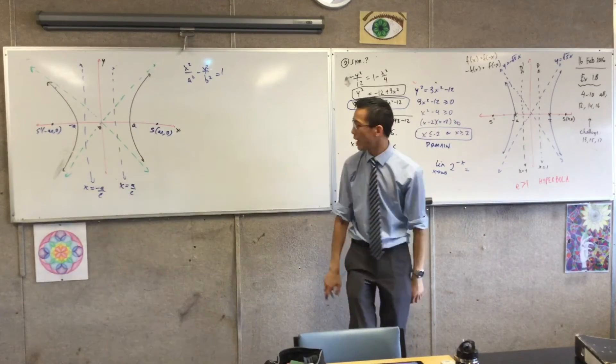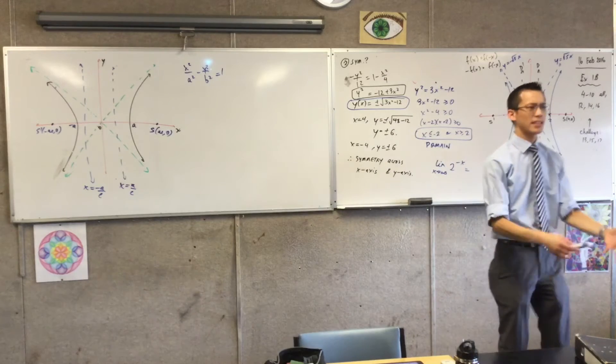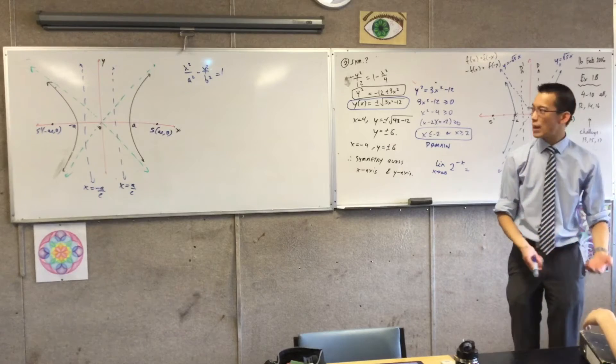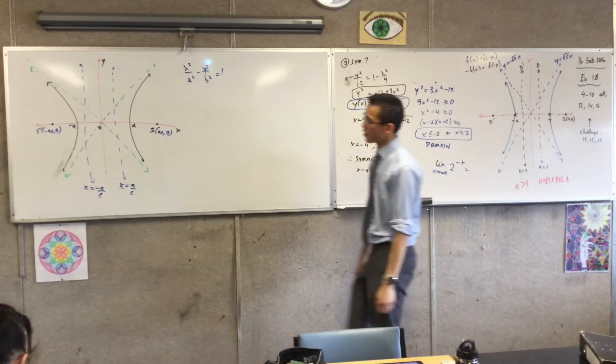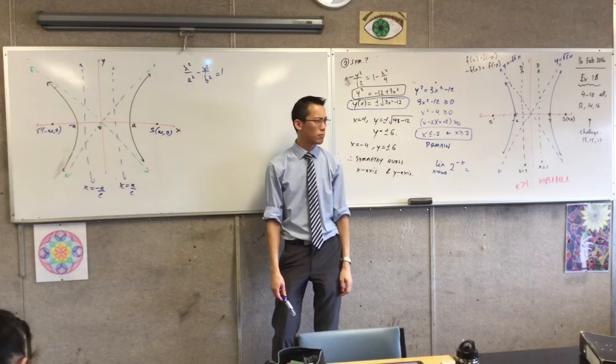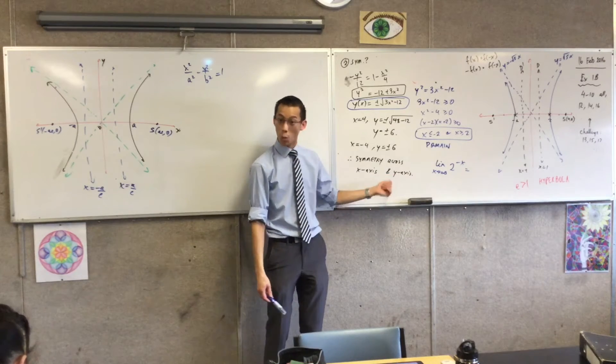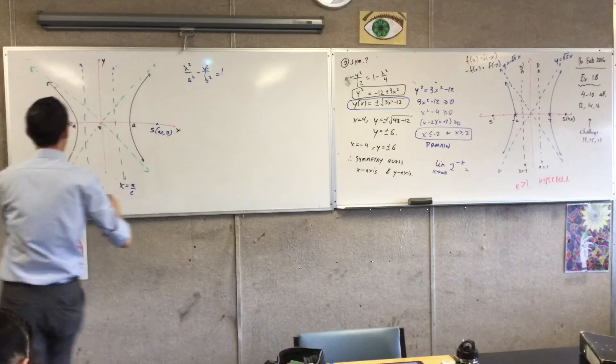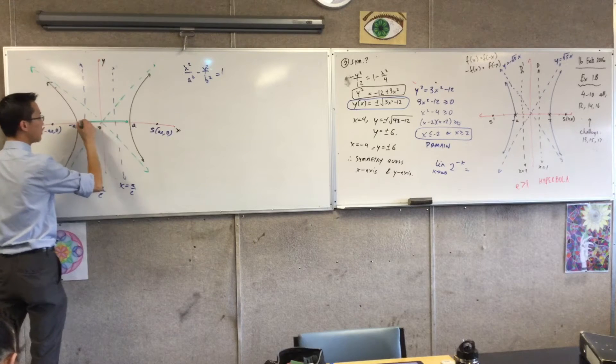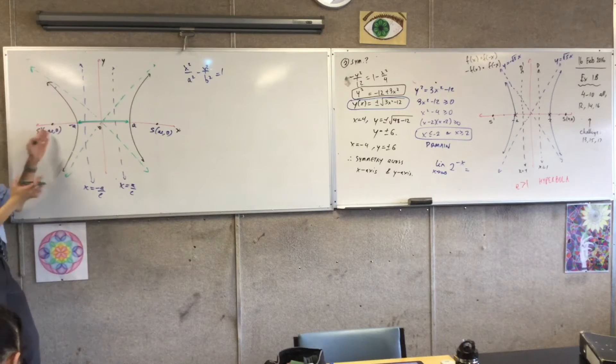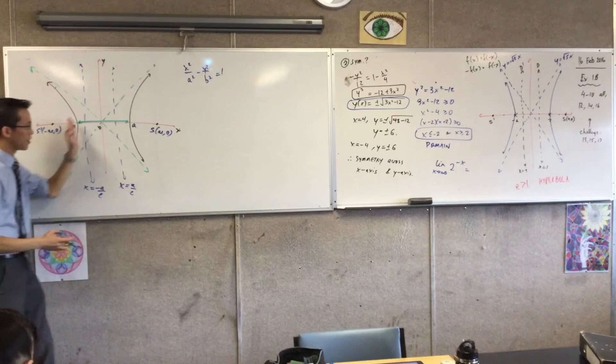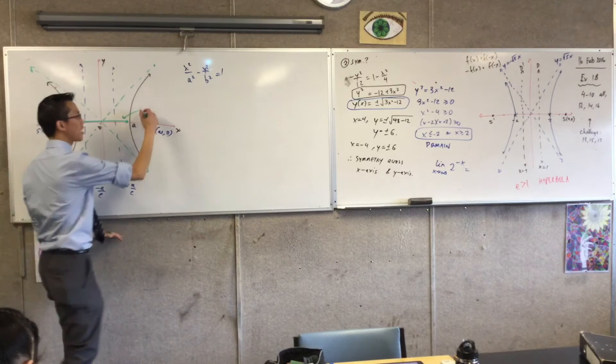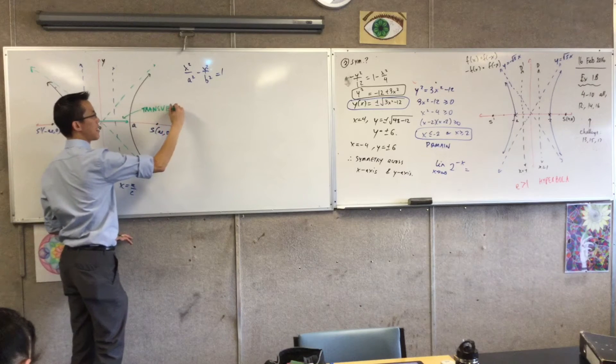But that's not all there is to it. You might remember, on the ellipse, there are axes of symmetry. There are also axes of symmetry here. But you can't really say there's a long one and a short one. Where are the axes of symmetry? X and Y. They're on the coordinate axes. I can label in this axis here. Now, because this is an axis that happens when you cross from one branch of the hyperbola over to the other, they call this the transverse axis.